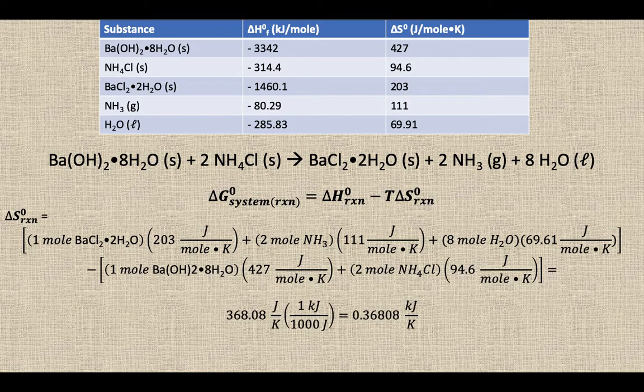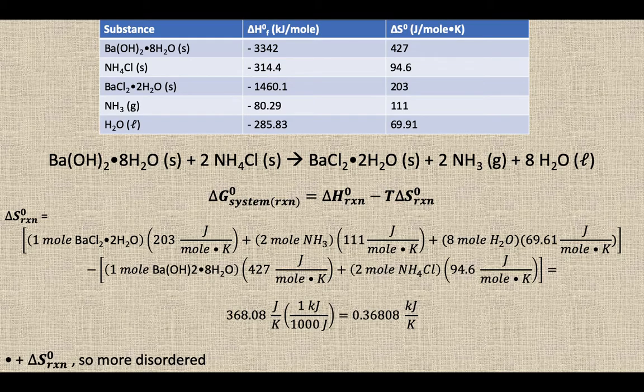And we get a positive 368.08 joules per kelvin, which I'm going to switch into kilojoules per kelvin just to make it unit compatible with my delta H that I just found on the previous slide. So if it's positive S, it's becoming more disordered.